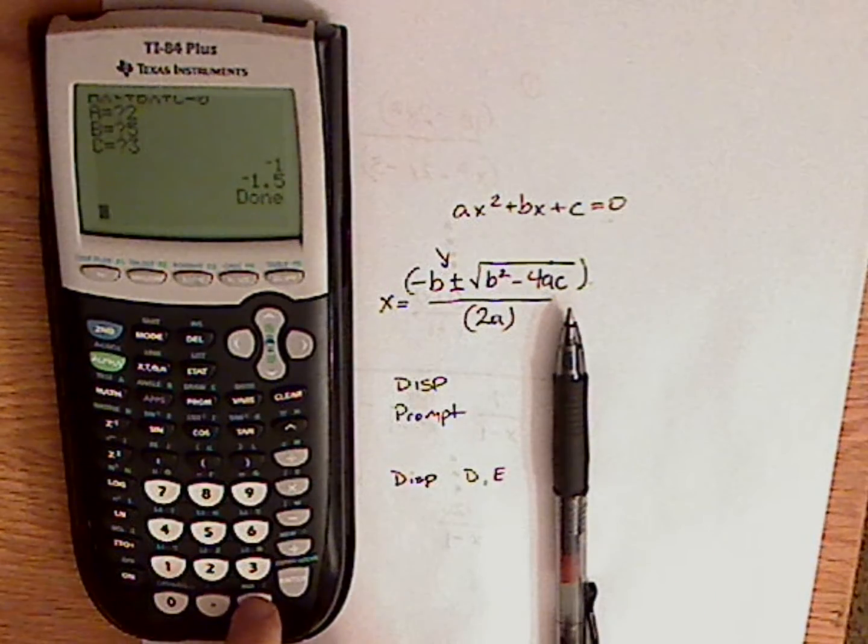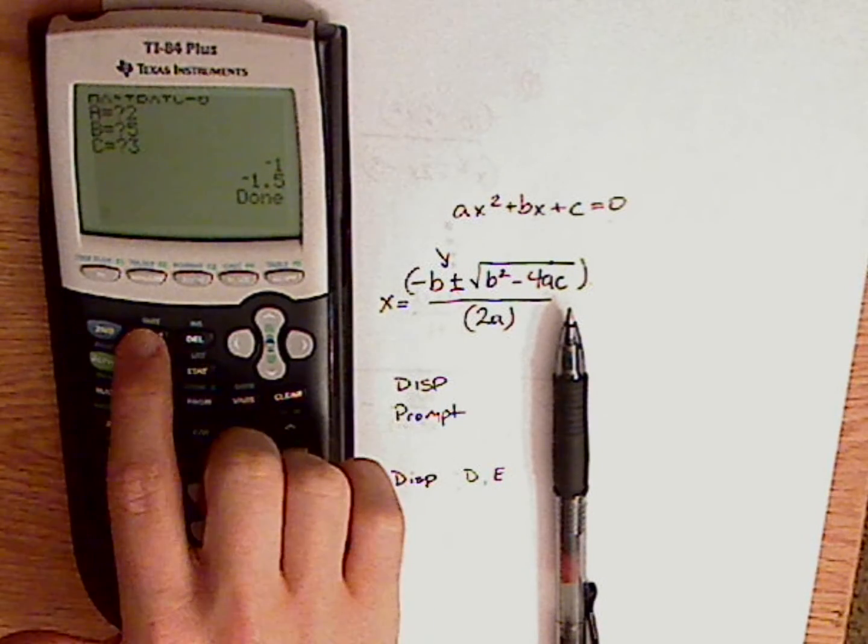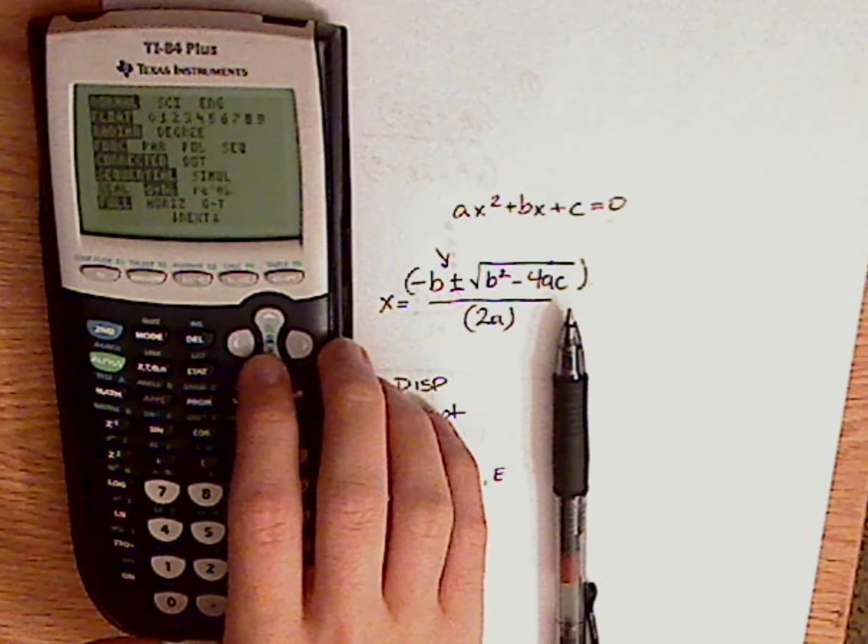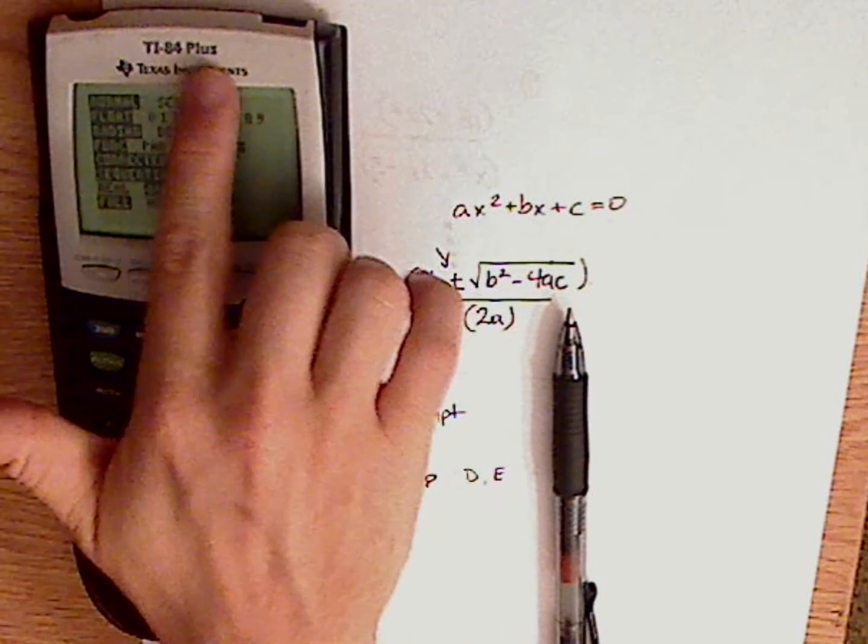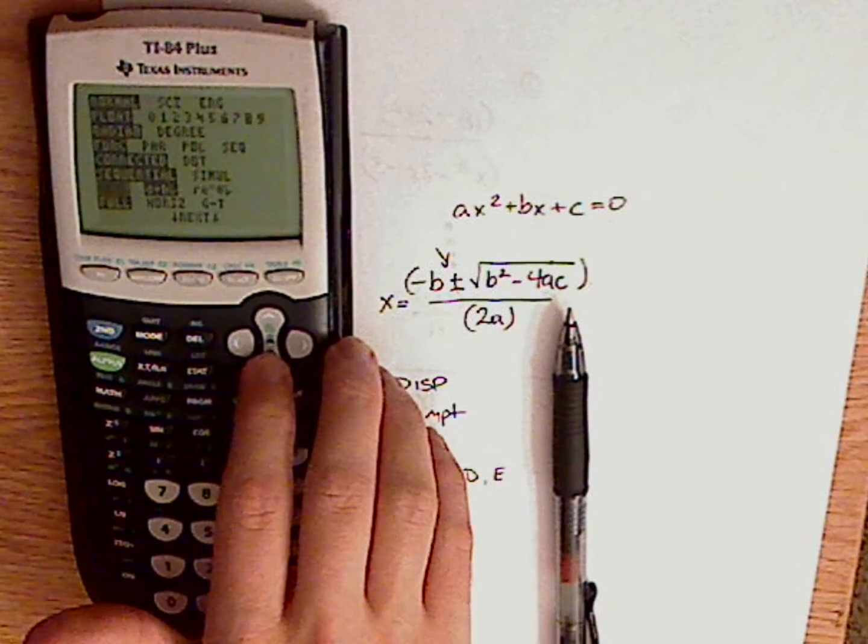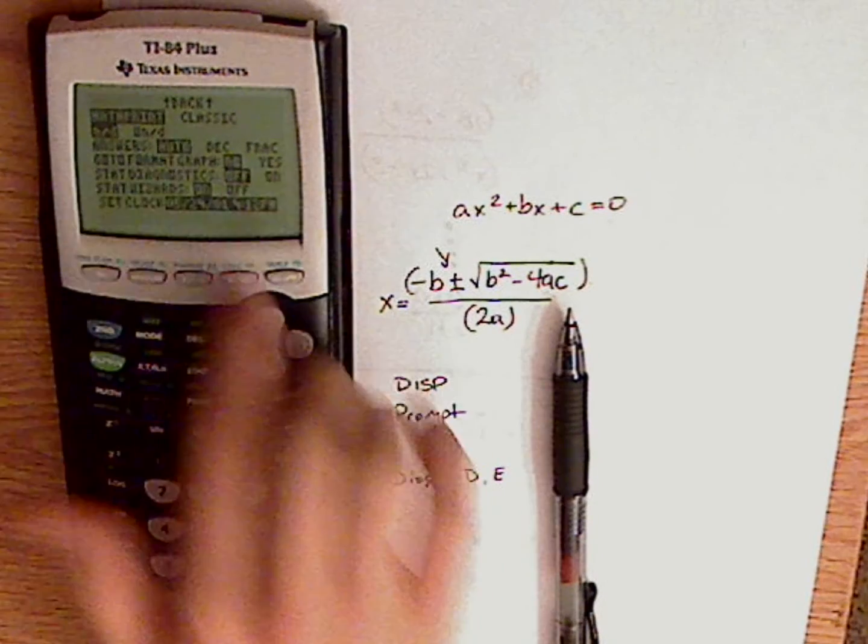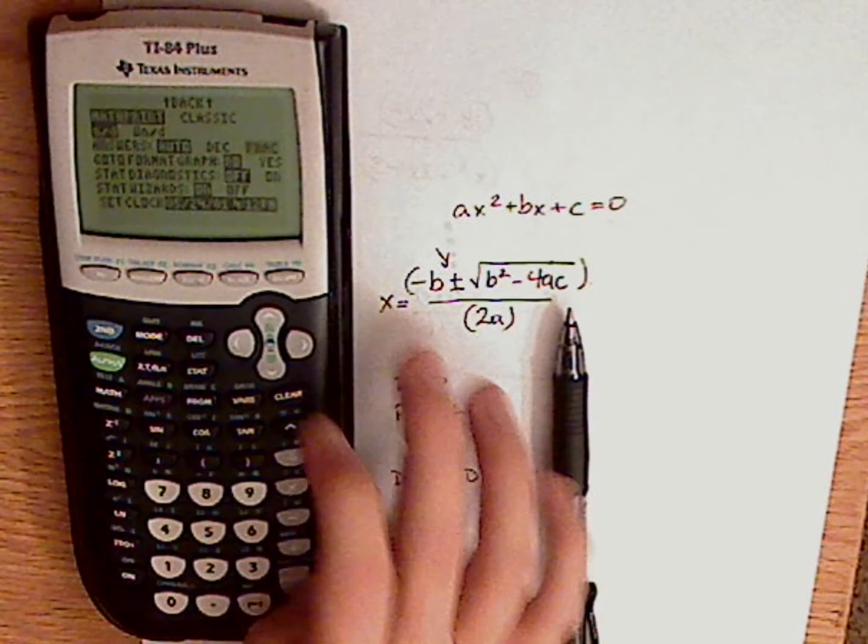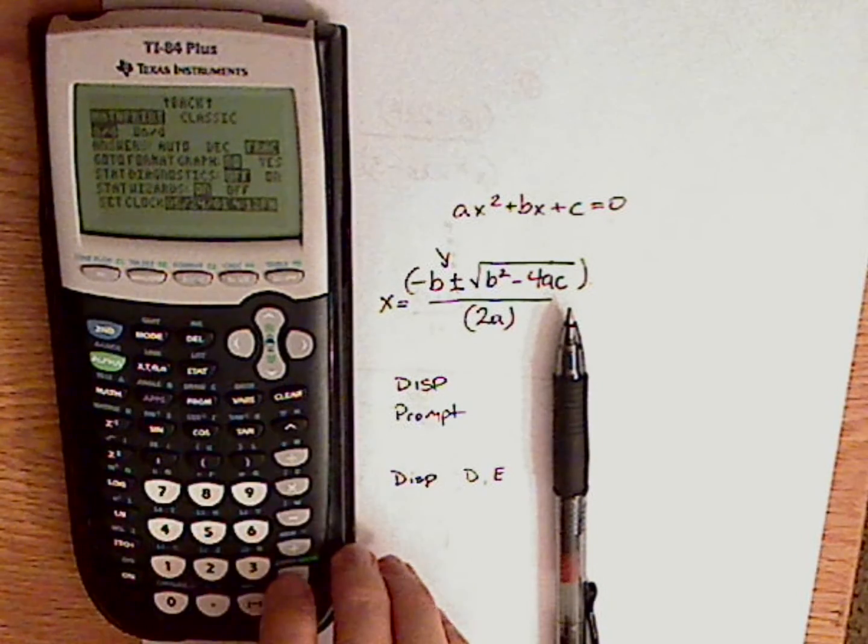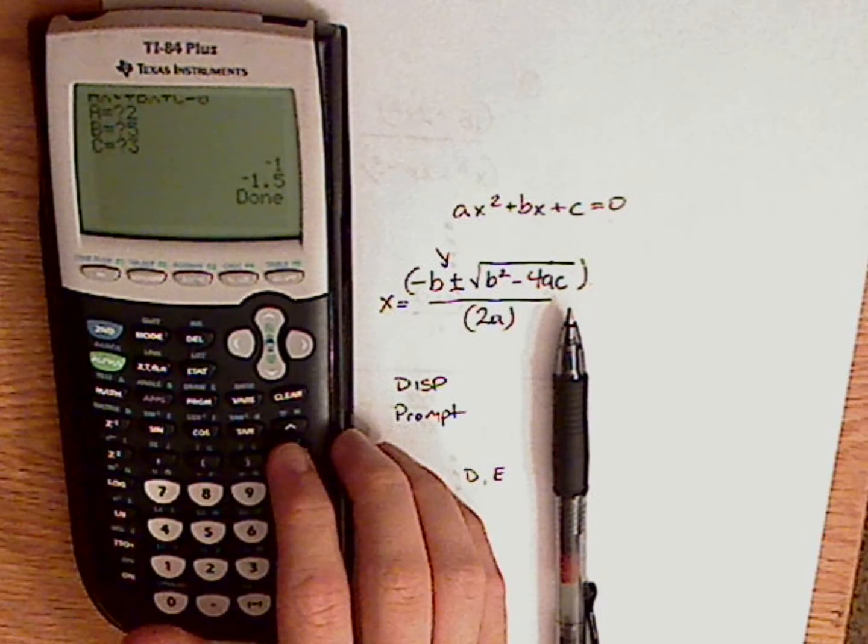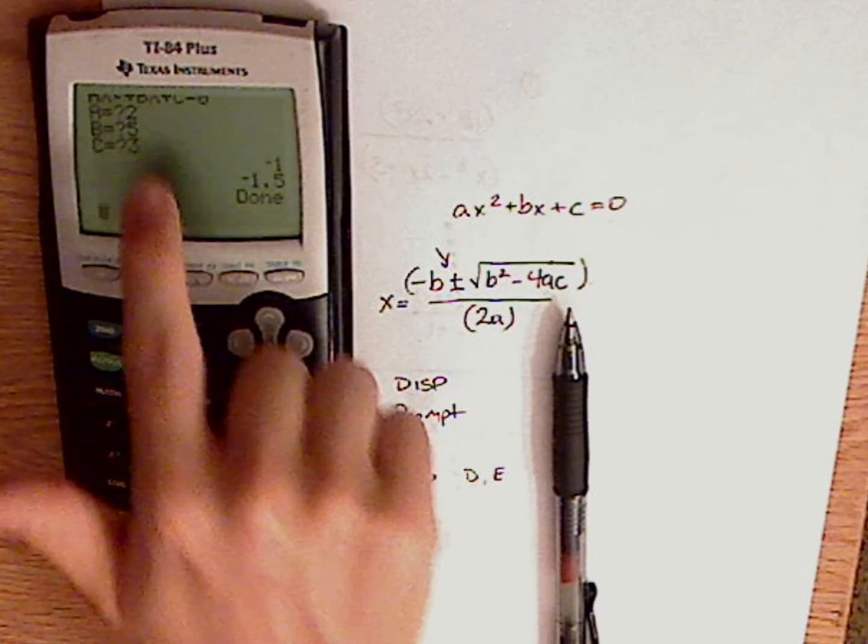But let's say I wanted a fraction. I can either change the mode. Let me do that. Change the mode. Now this is a TI-84+. Some editions might not have it. And then you go to answer, and then fraction, and then hit enter to click it on.